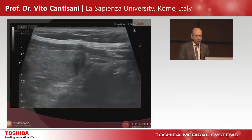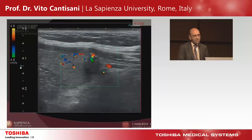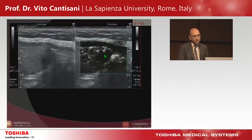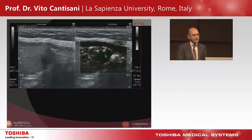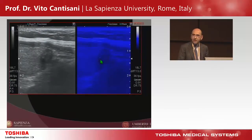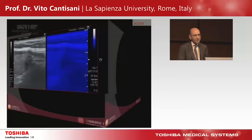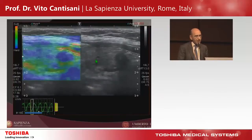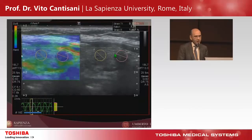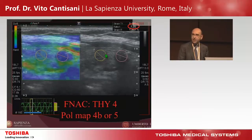Let's see another example. This is an irregularly marginated hypoechoic nodule, taller than wide, with some vessels, but SMI better depicts additional internal tiny vessels. Micropure helped us detect tiny microcalcifications. By performing elastography, we found a completely blue and hard lesion. Using the strain ratio, the value was very high, consistent with a malignant lesion.